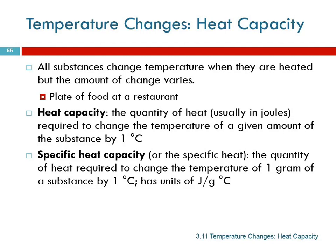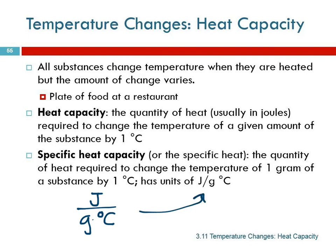The units end up being joules per gram degree Celsius — joules over grams times degrees Celsius. It's the amount of heat to change one gram one degree.